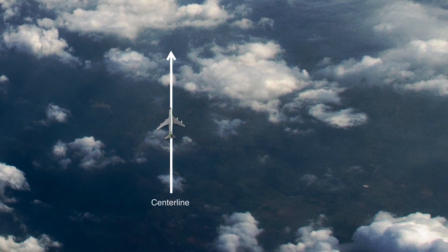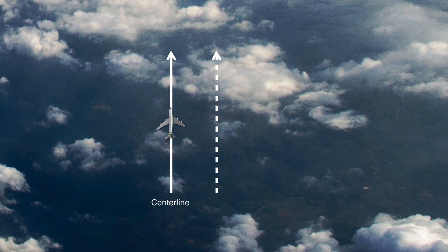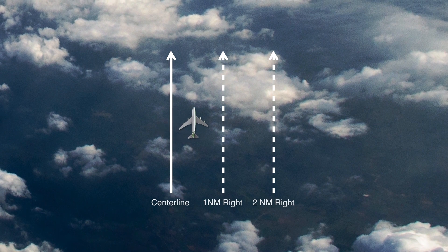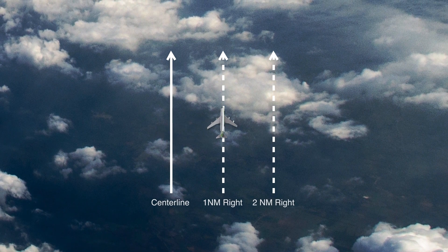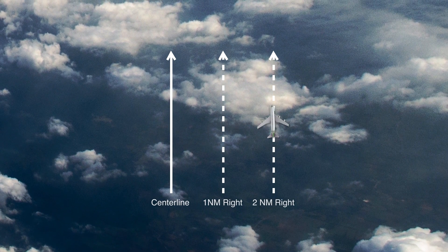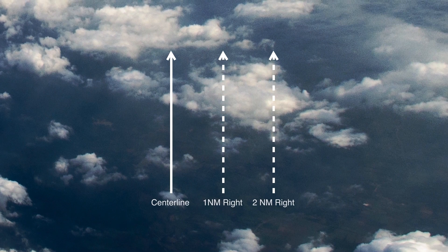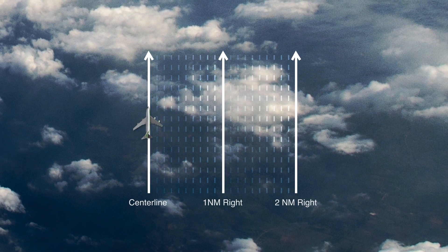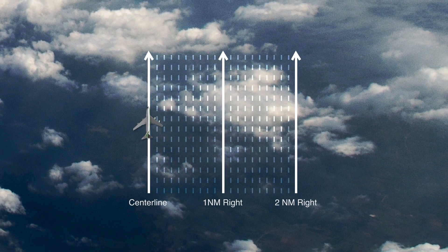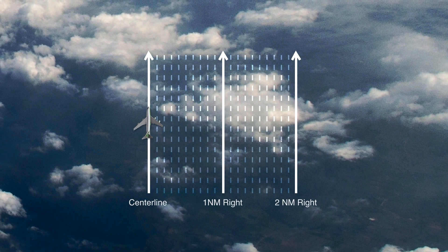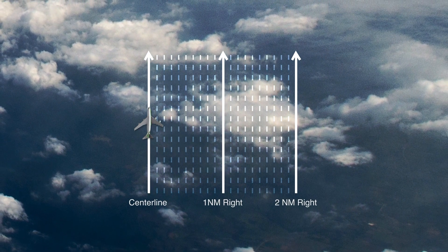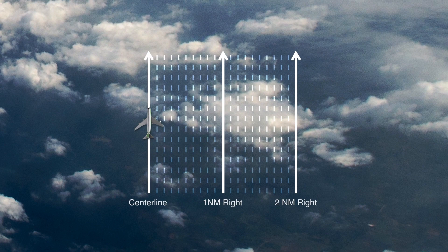3. Options include route centerline or offset to the right of route centerline. There are three choices: centerline, one nautical mile right, or two nautical miles right. Or if equipped, there are 21 choices: centerline, a tenth nautical mile right, two tenths nautical miles right, etc., up to two nautical miles right of centerline.